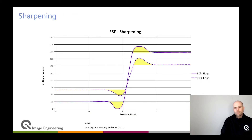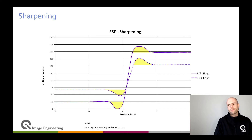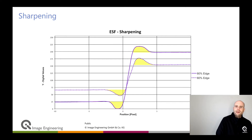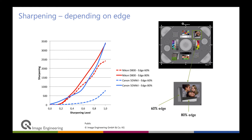Once we have measured the edge spread function in detail, we can also measure the undershoot and overshoot. With many devices like mobile phones and security cameras where sharpening is applied, the edge spread function may show a strong overshoot and undershoot — ringing artifacts. These can be disturbing depending on their size and amount, and this is definitely something you want to measure and track during your development phase.